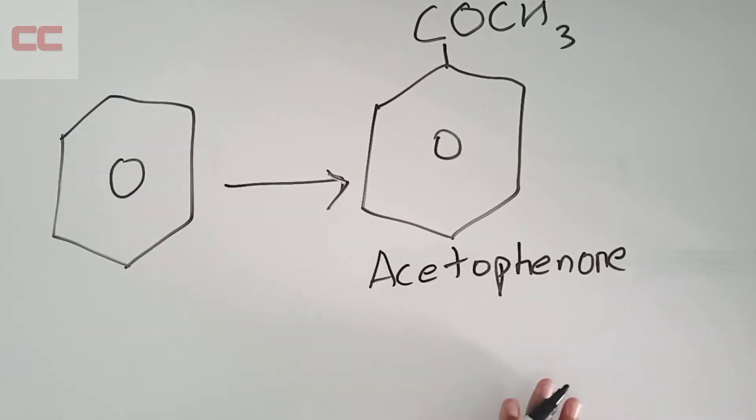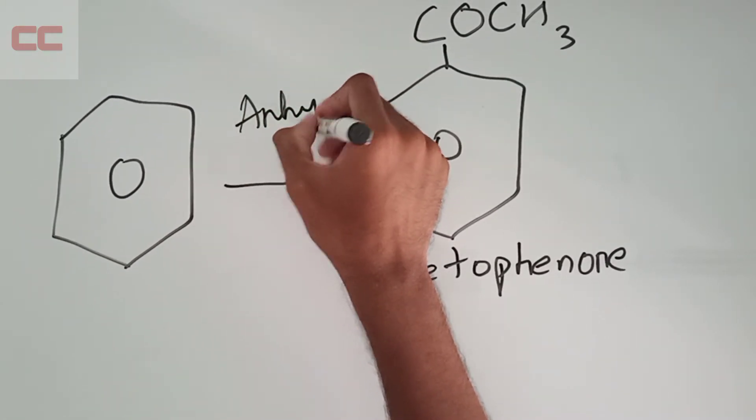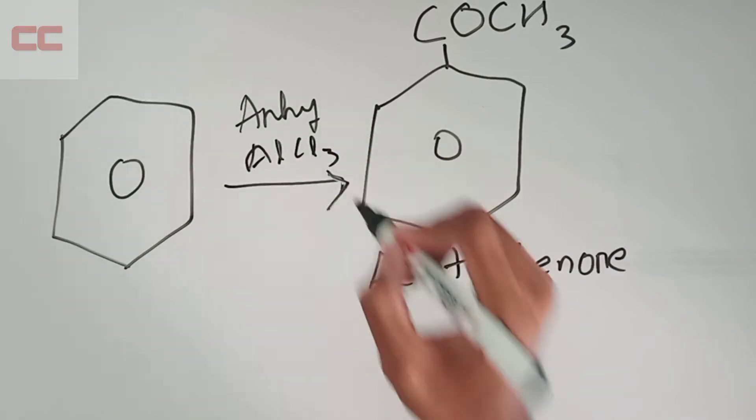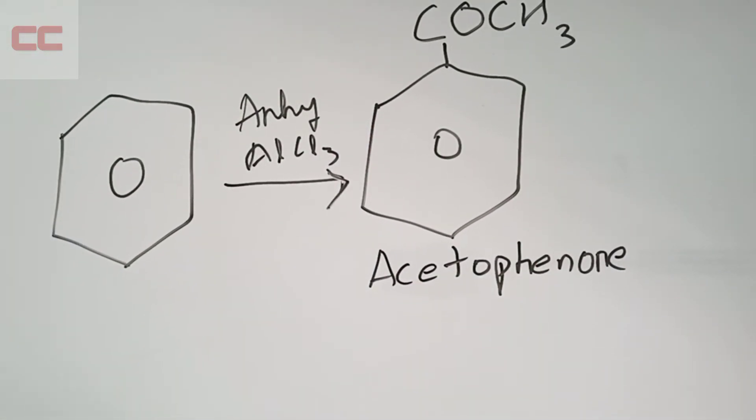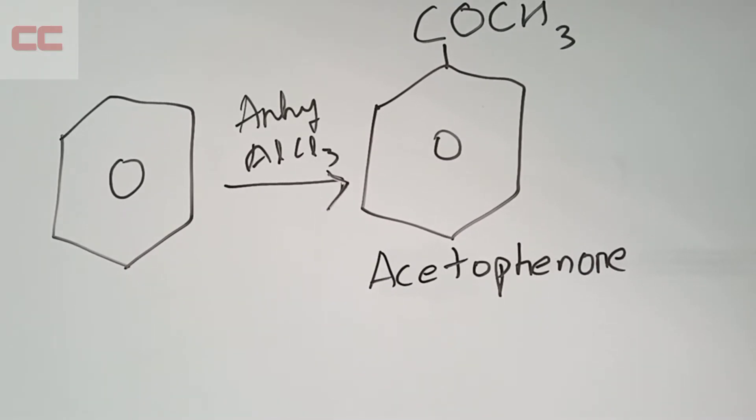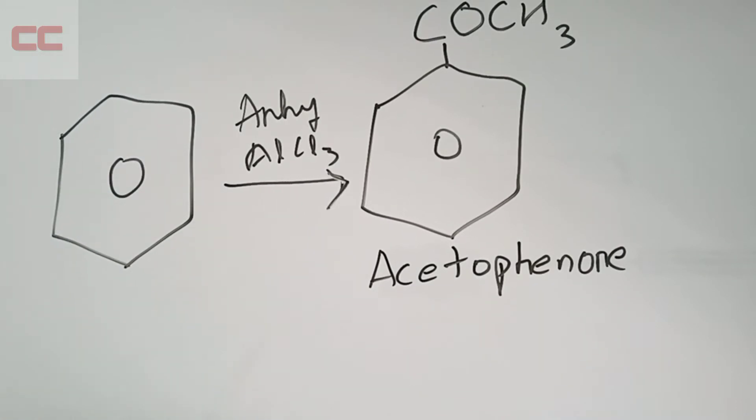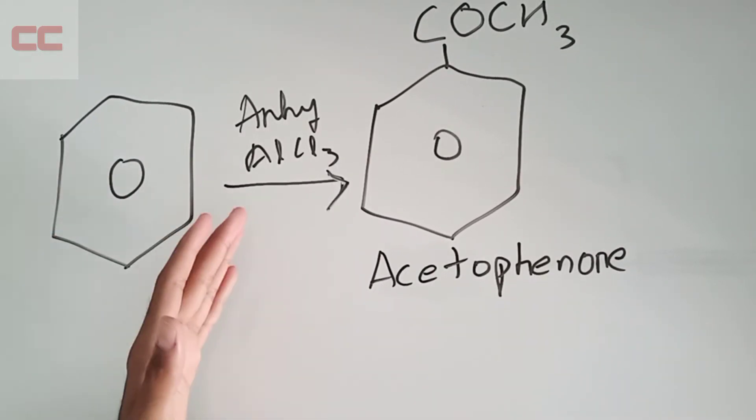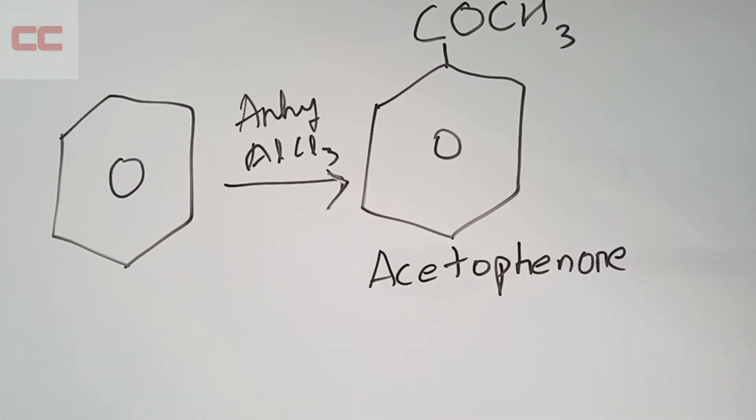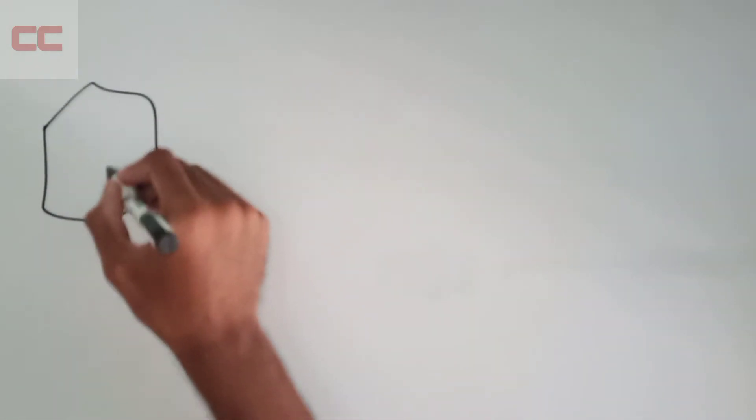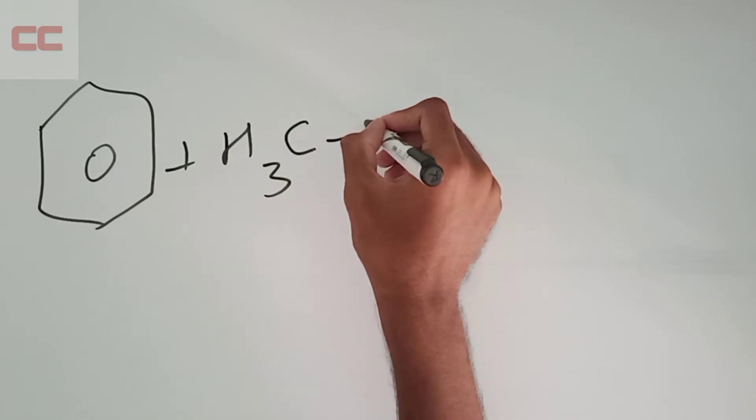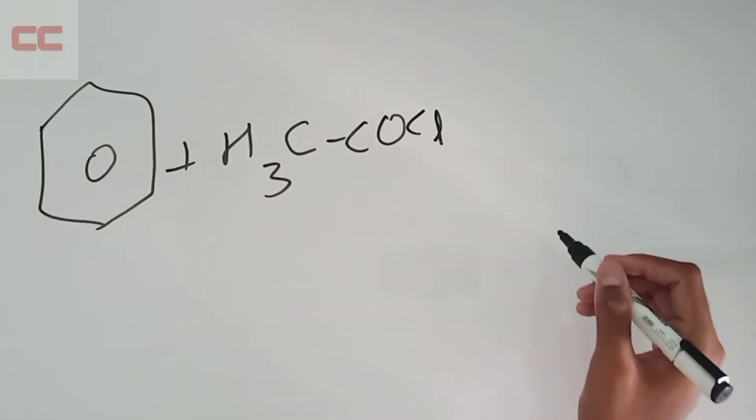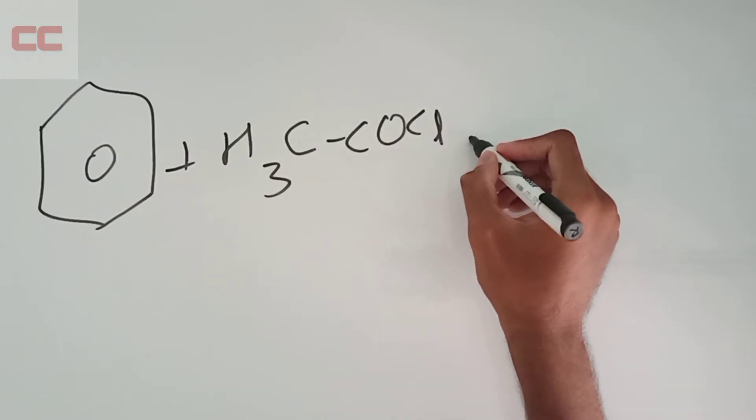You have to remember that for these kinds of reactions, you have to add anhydrous aluminum chloride. Anhydrous AlCl3 plays a key role in today's reaction. So let's see the first step. Let me erase this - hope you have taken a screenshot or written in your notes.